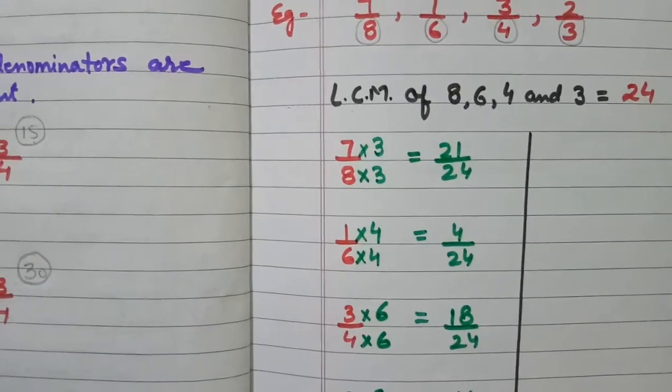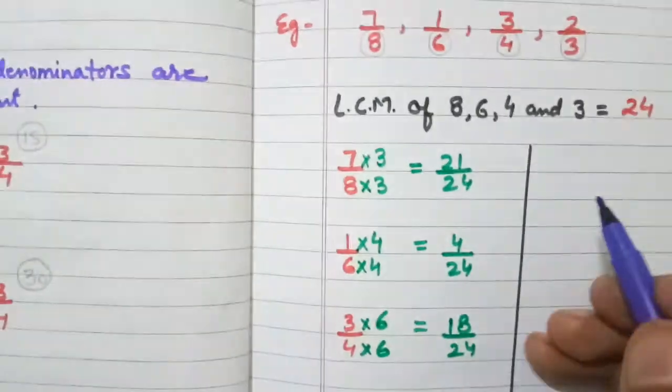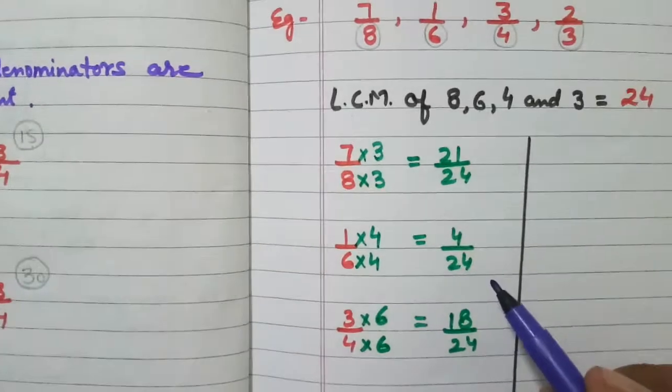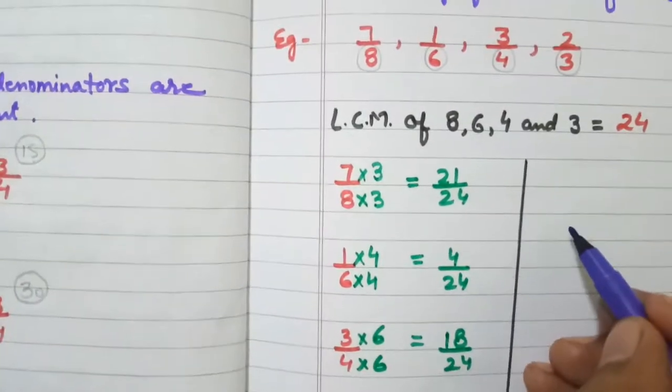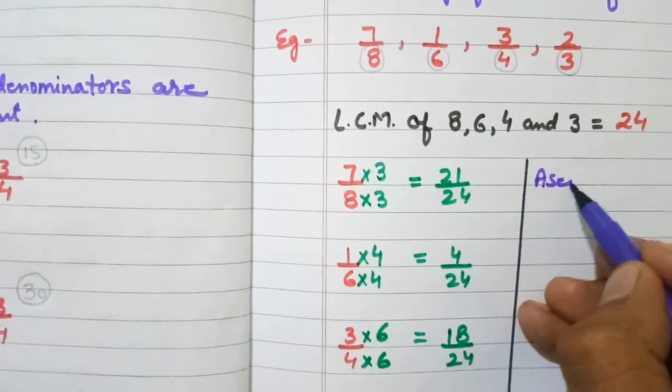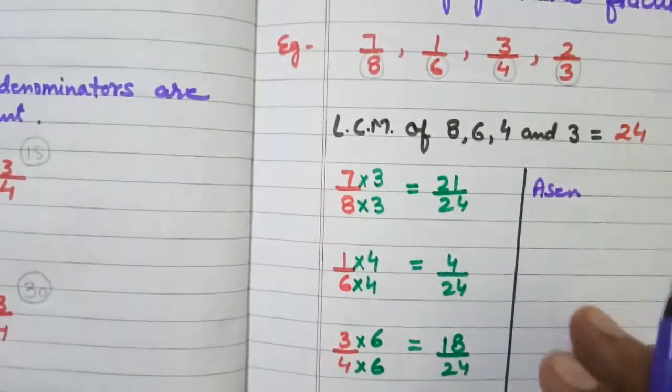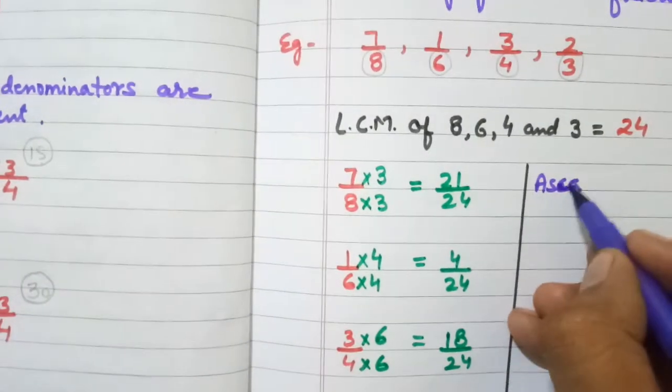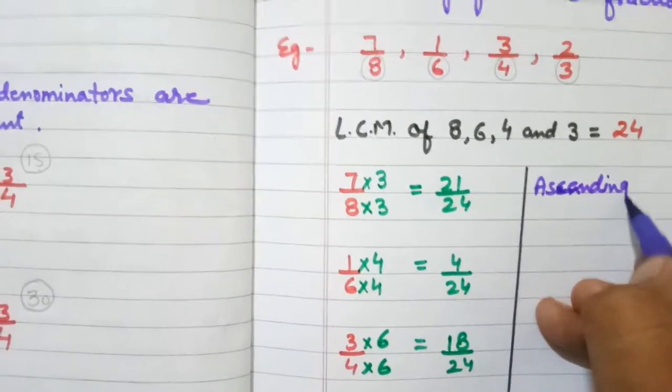So, I am going to arrange the fractions in ascending order. Ascending order means smaller to bigger. This smaller is ascending. It is ascending order.